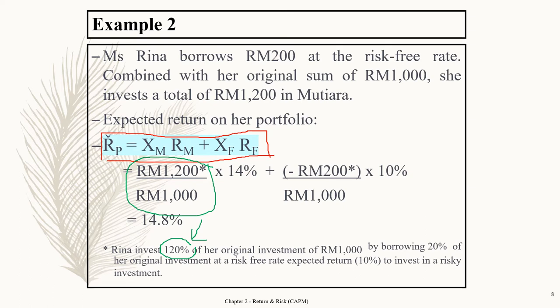So the weightage is 1.2. You can also express it as 120% and convert to decimal 1.2. That is the weightage for the amount invested in Mutiara, multiplied by the return of 14%.